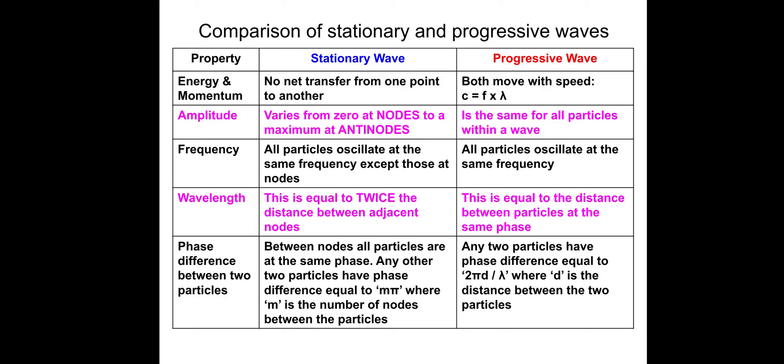Energy and momentum: no net transfer of energy from one point to another. Progressive wave: both move with speed c equals f lambda. Amplitude: stationary wave varies from zero at nodes to a maximum at antinodes, which we've just discussed. Progressive wave is the same for all particles within a wave. Frequency: all particles oscillate at the same frequency except those at nodes. Progressive wave, all particles oscillate at the same frequency.